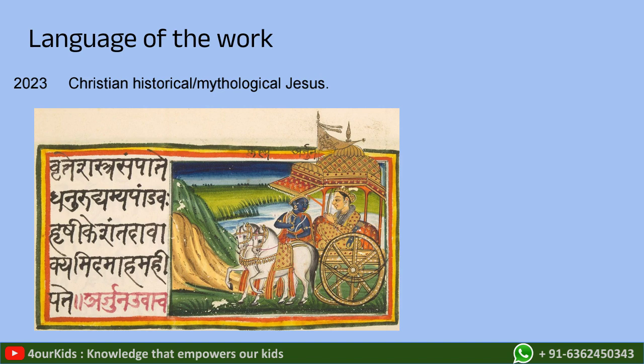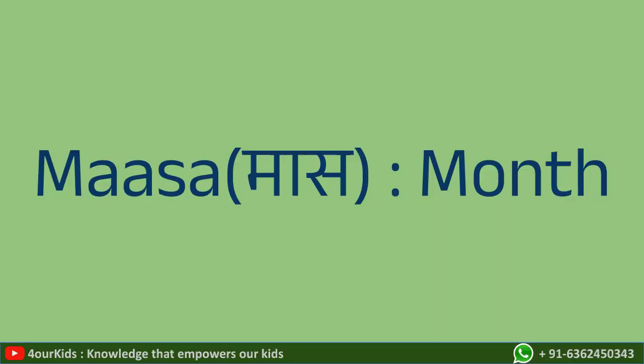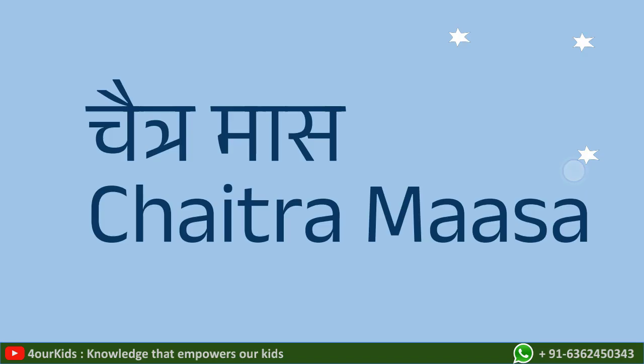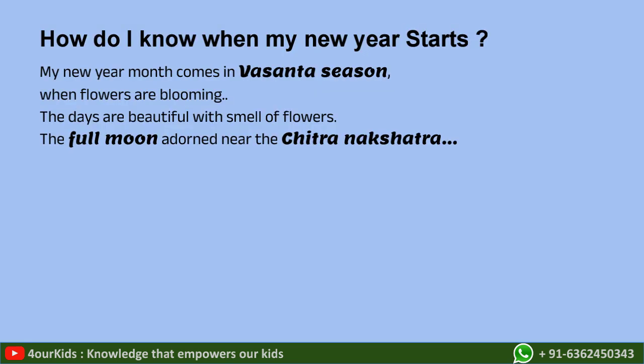We have completed what is called the year. Now we have the masa — masa means month. The first month in a lunar Hindu cycle for the majority of Hindu calendars is Chaitra masa. The meaning of Chaitra is that technically the full moon is positioned near the Chitra nakshatra. We have the Vasanta season when the flowers are blooming and the days are beautiful with the smell of flowers.